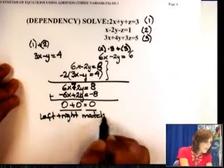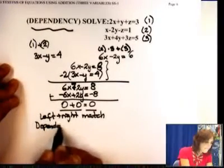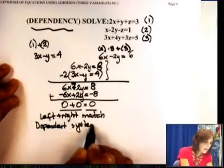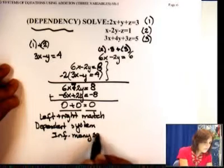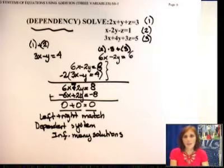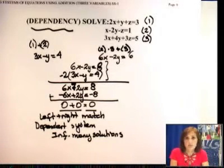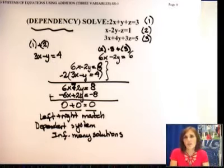So that means I have a dependent system. That means I have infinitely many solutions. So what did I end up with? At the end, I had either one solution, one unique solution, no solution, or infinitely many solutions. So make sure that you understand that. So we're going to go and use another method in a minute to solve the same type of problems. And that method is going to be called substitution method.